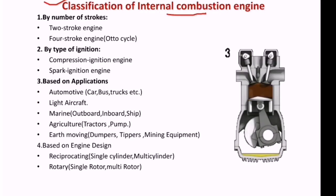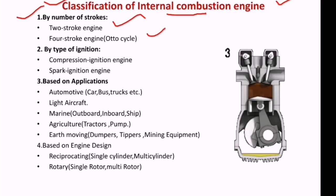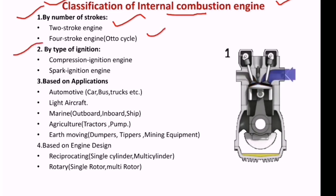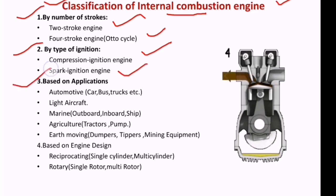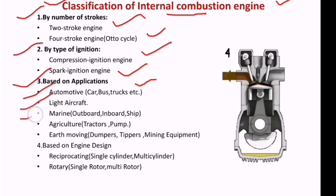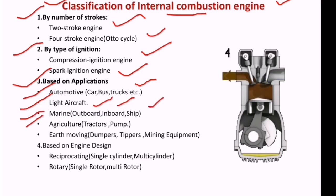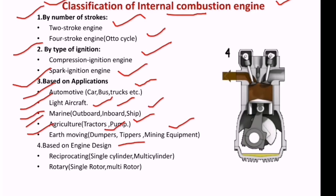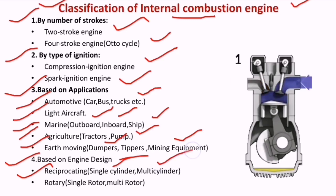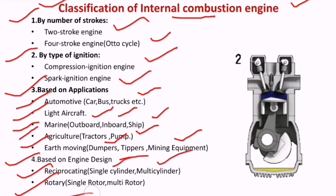Classification of IC engines: by number of strokes, it is 2-stroke and 4-stroke. By type of ignition, it is compression ignition (CI engine) or spark ignition (SI engine). Based on applications: automotive applications like car, bus, and trucks; light aircraft; marine applications like outboard, inboard, and ships; agriculture applications like tractors and pumps; earth moving applications like dumpers, tippers, and mining equipment. Based on engine type: reciprocating — single cylinder and multi cylinder; rotary type — single rotor and multi rotor.